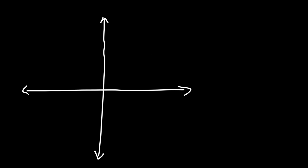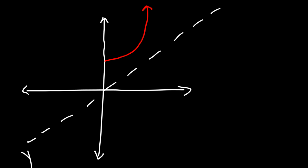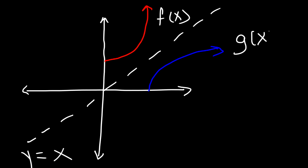Let's try another example. So let's say this is f of x, and here we have the line y equals x. Go ahead and draw the inverse function of f — it's going to look something like that. Let's call that g of x. That's a simple way to sketch the inverse function using a rough sketch.